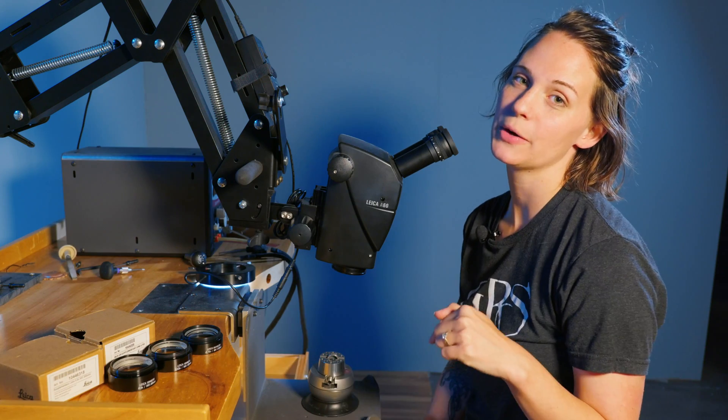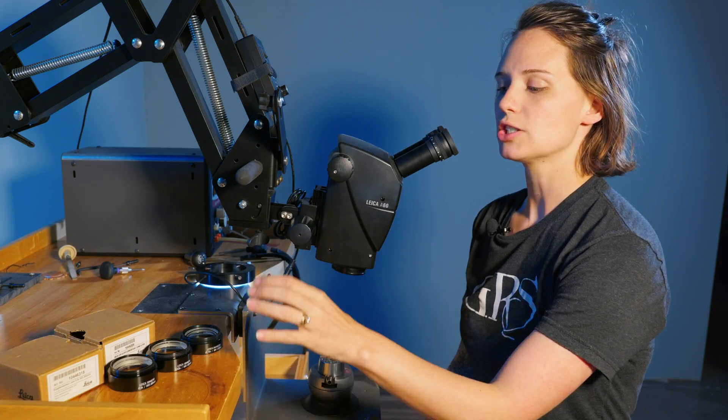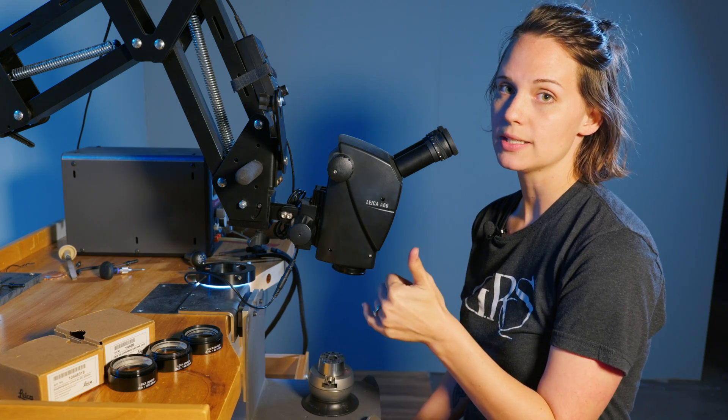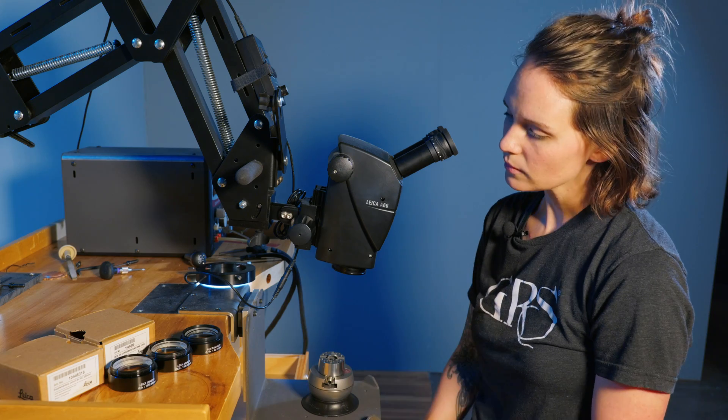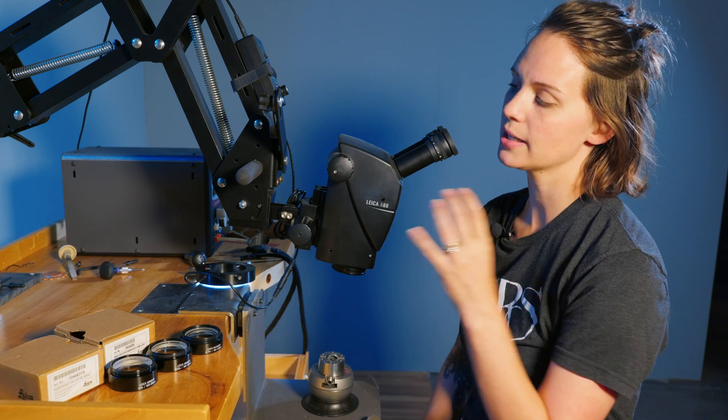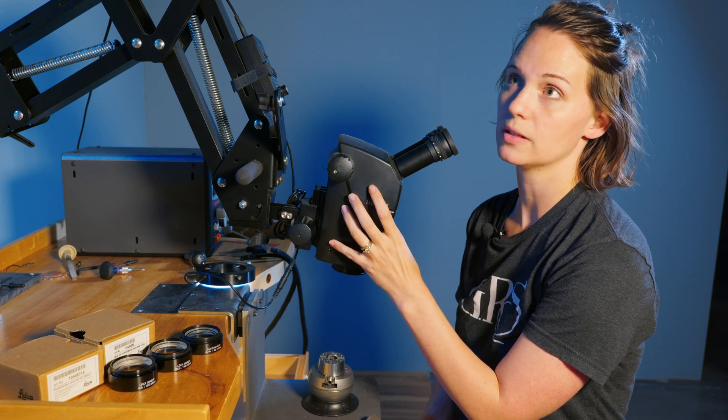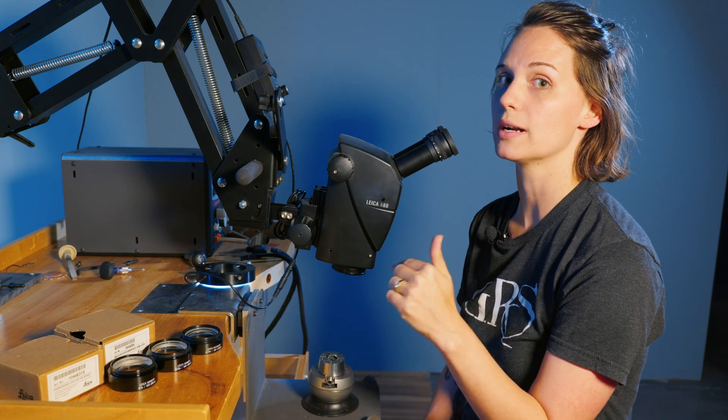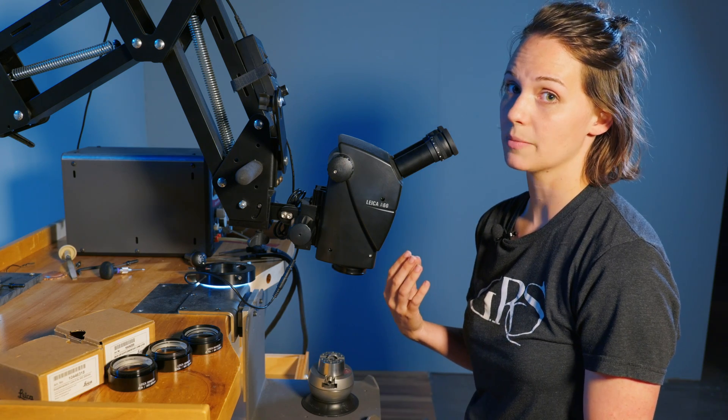In this video we're talking about auxiliary lenses. These are typically used to increase working distance and allow you to get under your microscope a little bit more. We're talking particularly about the lenses for the Leica. In the next video we'll talk about the options for the Meiji microscope.